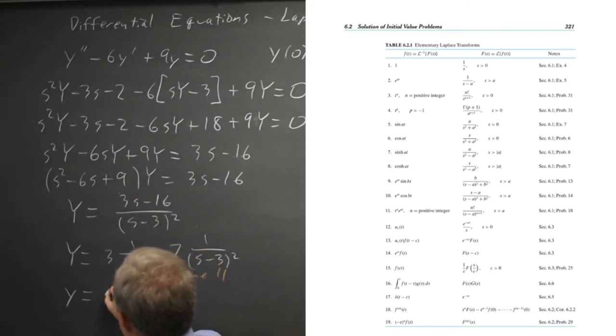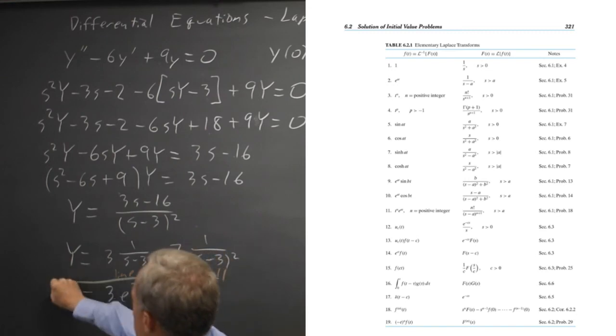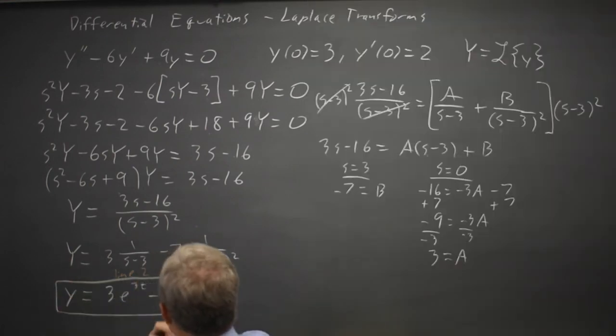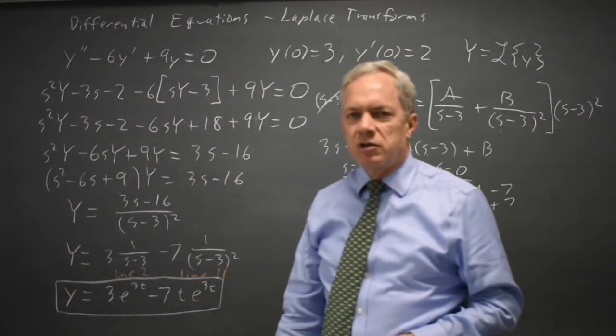So lowercase y the actual solution is 3e to the 3t and then minus 7 according to line 11 n factorial over s minus a to the n plus 1. So 1 in this case, 1 factorial over s minus 3 to the 1 plus 1 is t to the n e to the at. So that's t to the first e to the 3t. And that would be our solution complete with the coefficients.